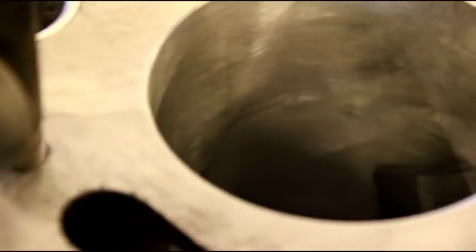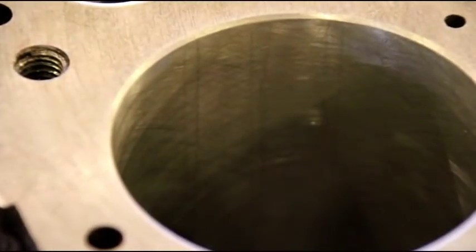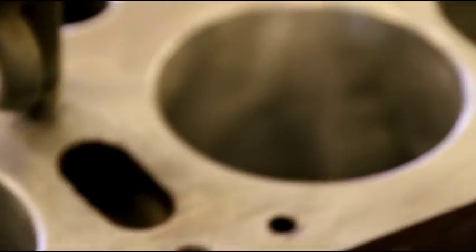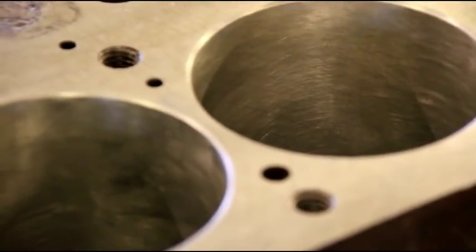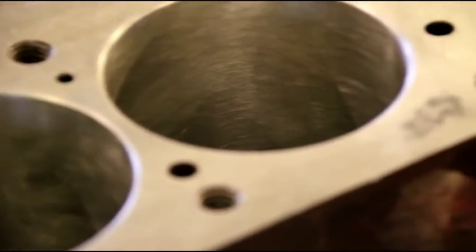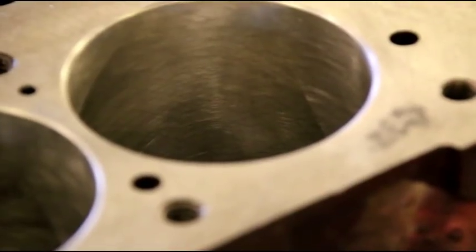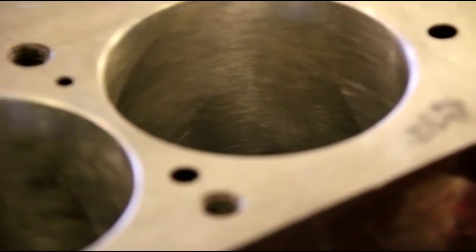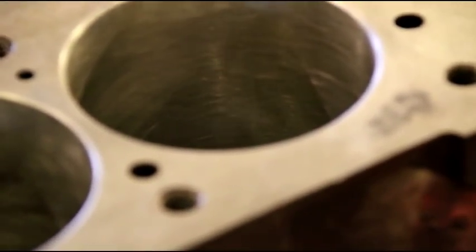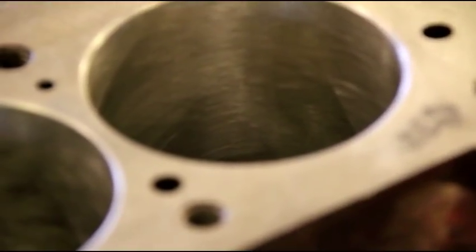They're very dirty so it's kind of hard to see. We've got oil still dripping down on these, but that is a proper hone job. The cylinders are right on size. Now that I took the torque plate off, if you put the bore gauge in there again, the dimensions are all over the place, and that's how it's supposed to be. So we'll put the pistons in, and then when the head goes on, our bores will come right to 3 inch 185 and a half, and that's what we're shooting for.